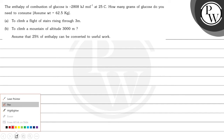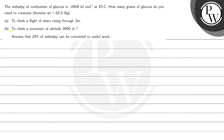Hello students, let's read this question. The enthalpy of combustion of glucose is minus 2808 kilojoule per mole at 25 degree centigrade. How many grams of glucose do you need to consume? Assume weight is equal to 62.5 kilogram, to climb a flight of stairs rising through 3 meters and to climb a mountain of altitude 3000 meters.